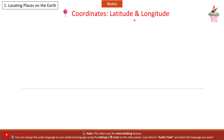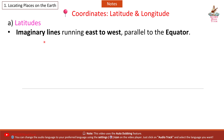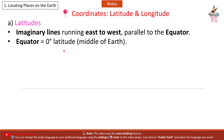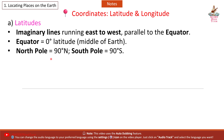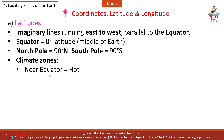Coordinates: Latitude and Longitude. A. Latitudes are imaginary lines running east to west, parallel to the equator. Equator: 0 degree latitude, the middle of the Earth. North Pole: 90 degrees north. South Pole: 90 degrees south.